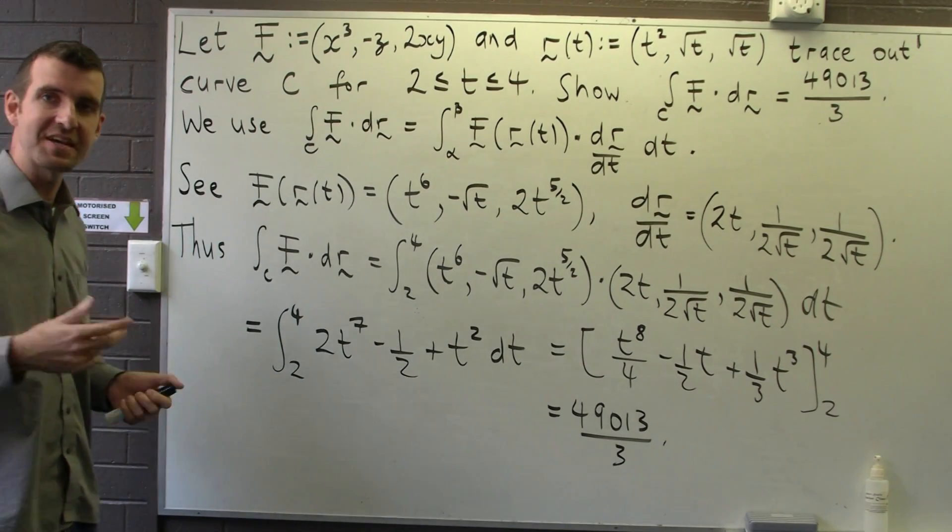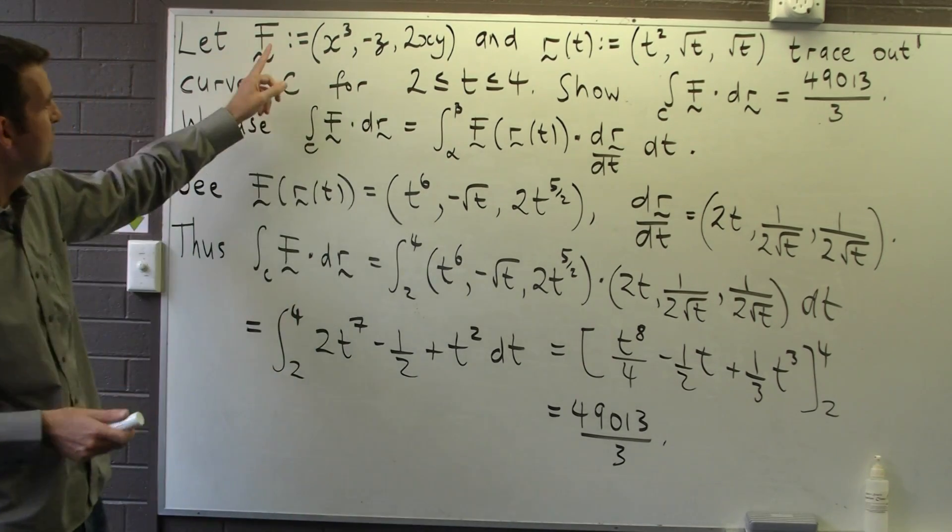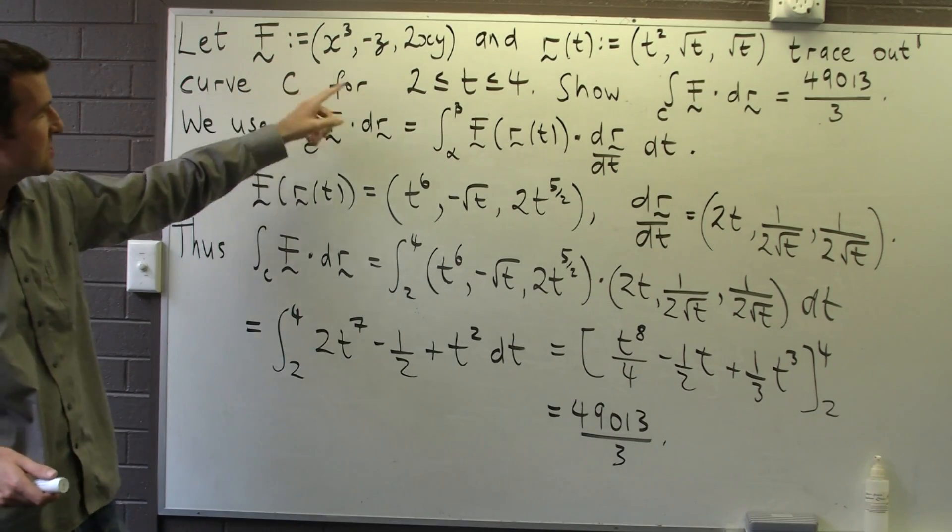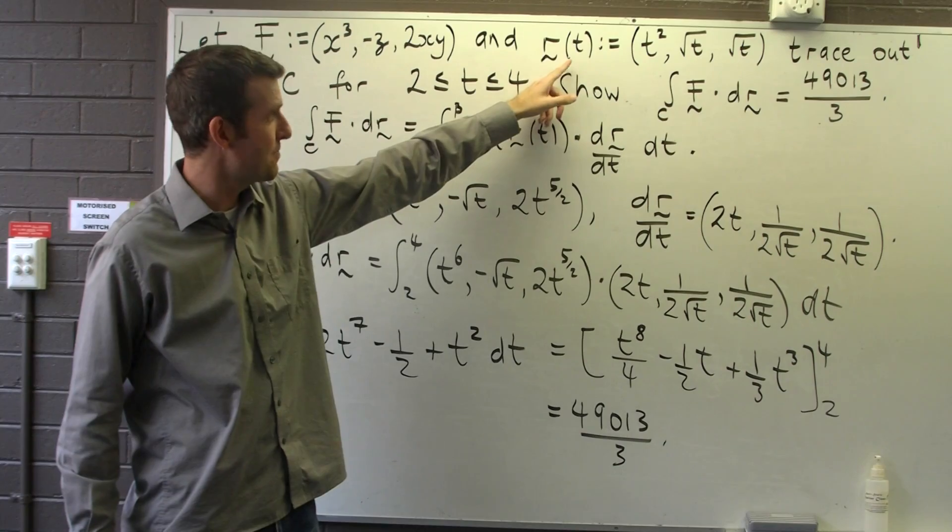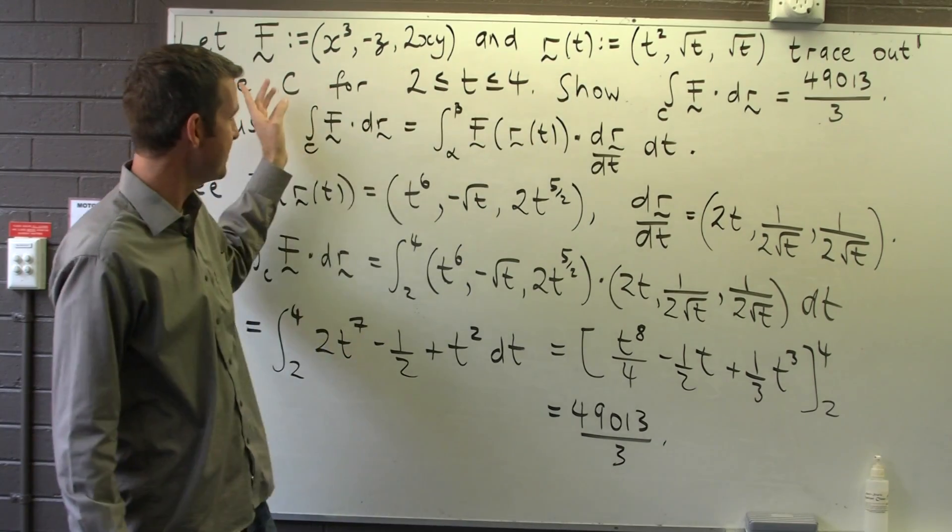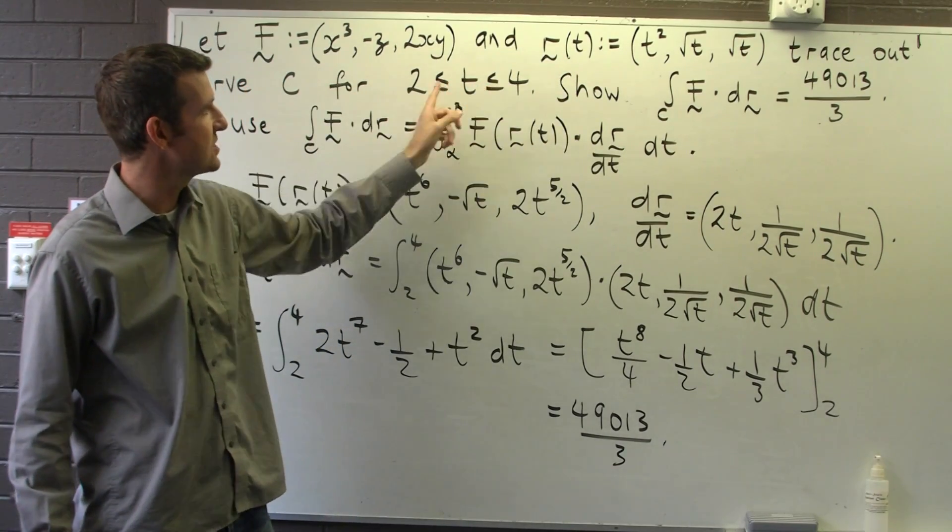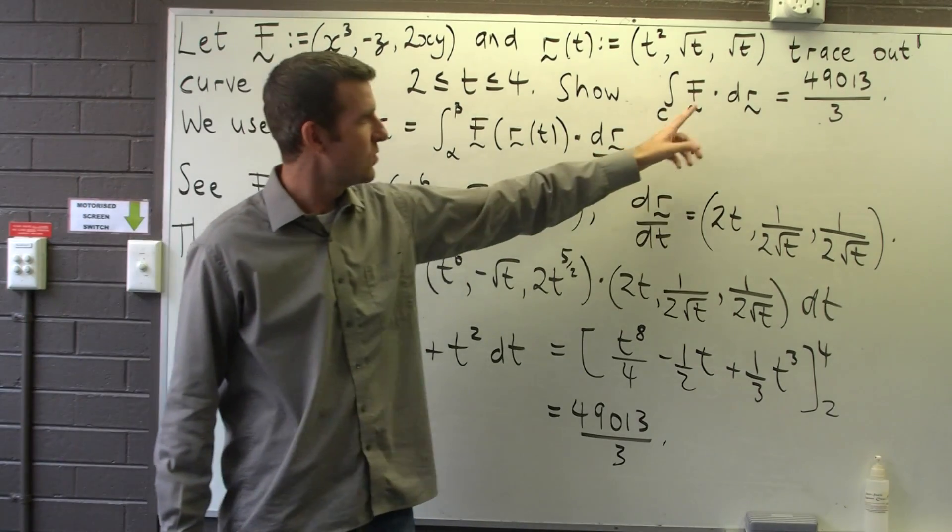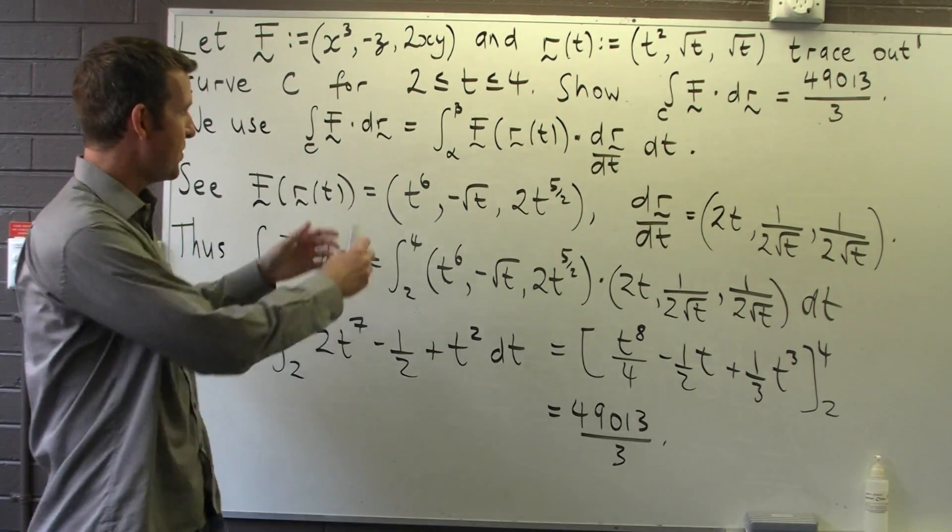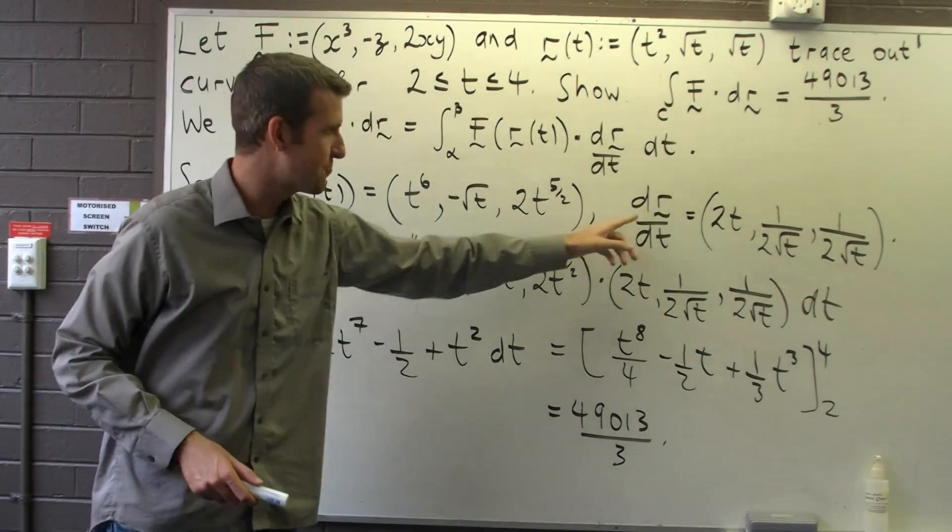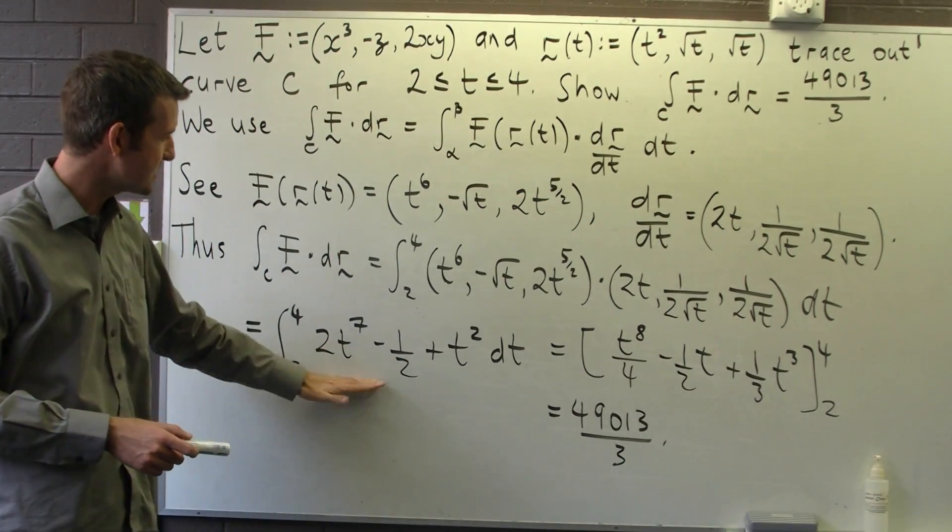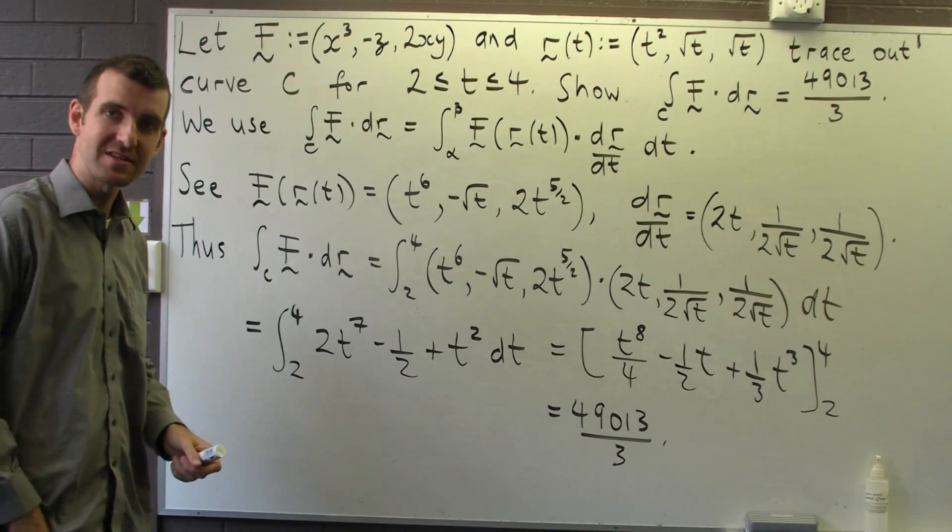So that's a basic example of line integrals. We were given a vector valued function and we were given a parameterization of the curve between two values of t. We evaluated this line integral by expanding it a little bit and working out the appropriate parts, and then we just broke it down to a simple integral. This is a good method.